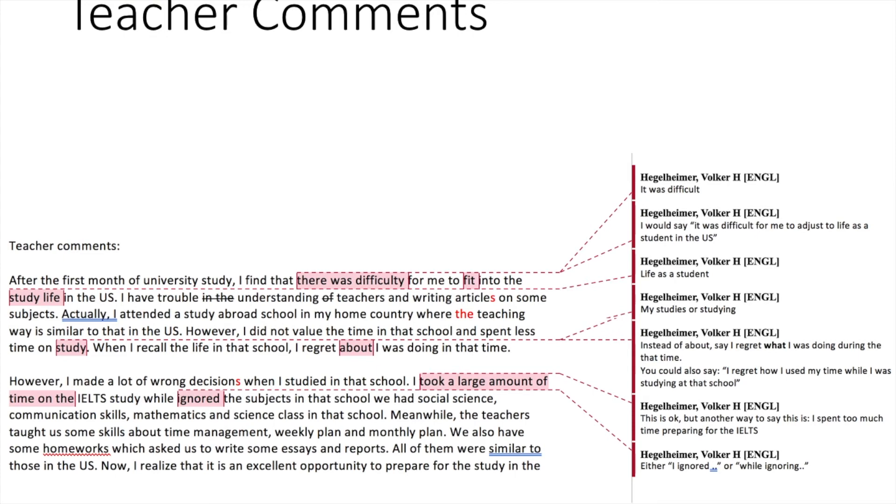We know what the person wants to say, but I would say something different. I would say it was difficult for me to adjust to life as a student in the US. So those are all kinds of feedback that really automated systems cannot provide here.